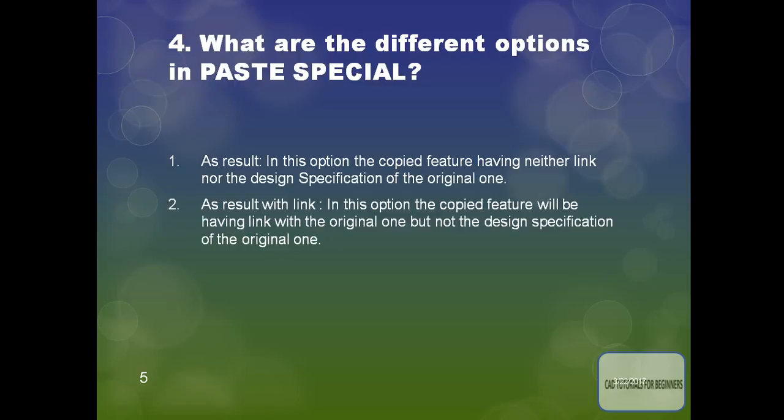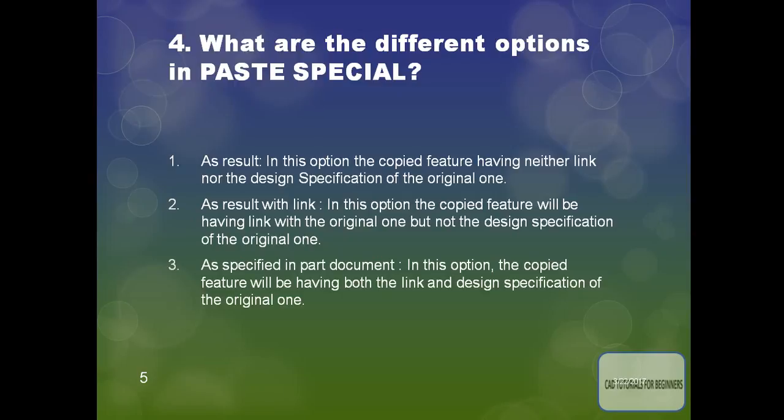The next paste special option is 'As Result With Link'. In this option, the copied feature will have a link with the original one, but not the design specification of the original one. It creates a dead body and does not have a feature tree.